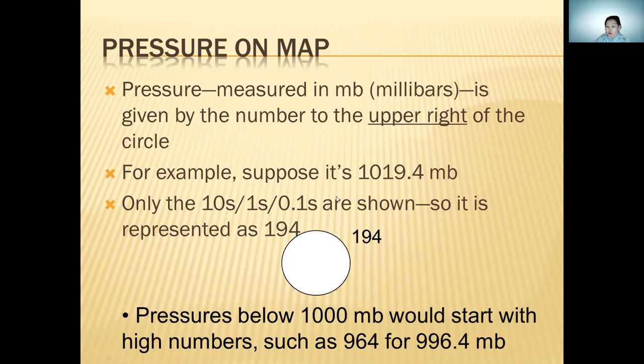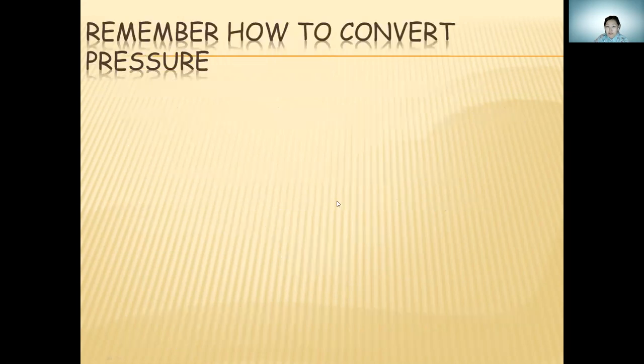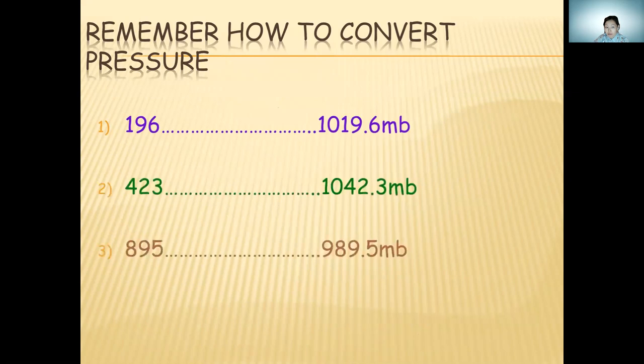Pressure below 1000 millibars would start with high numbers. Remember how to convert pressure: if it is 196, it is 1019.6 millibars. 423 is 1042.3 millibars. 895 is 989.5 millibars. This is how to convert pressure.